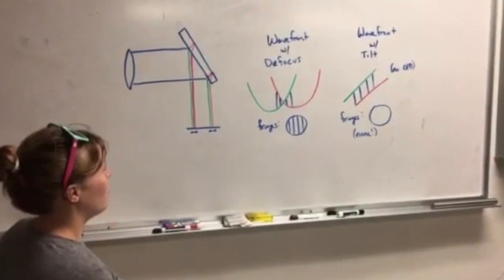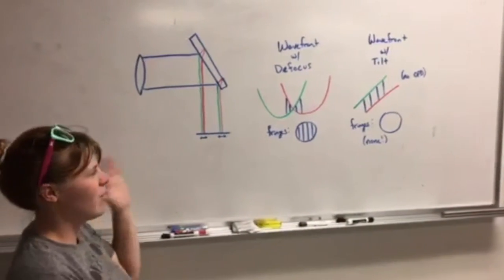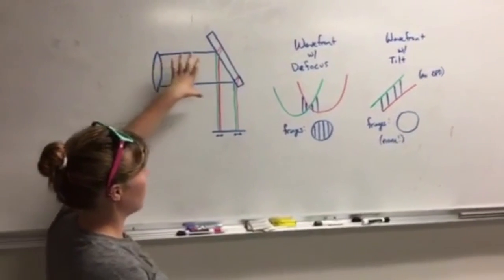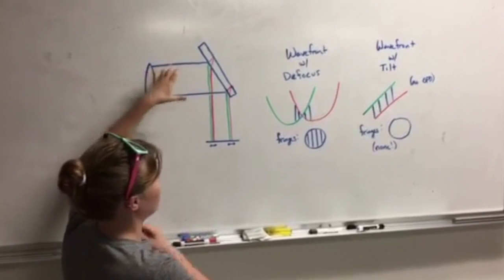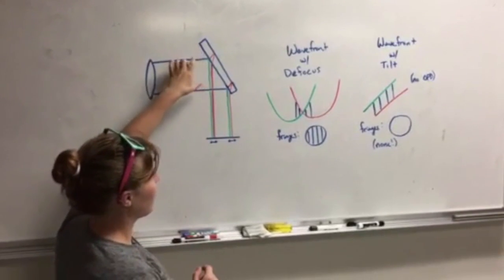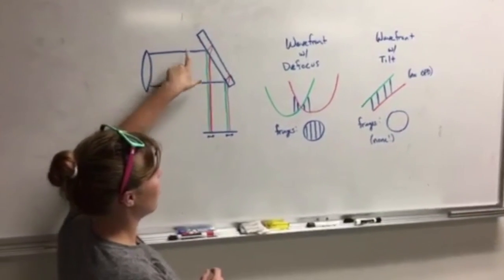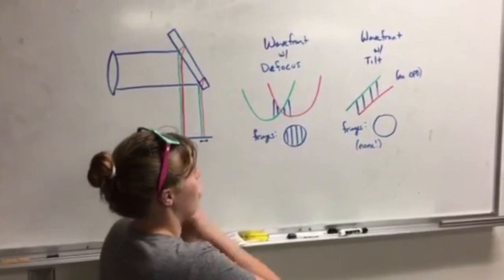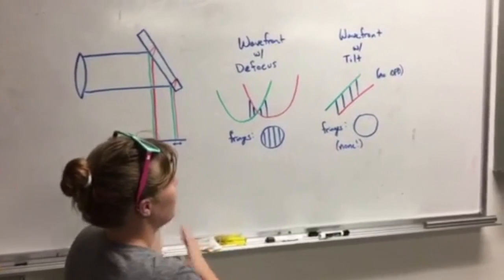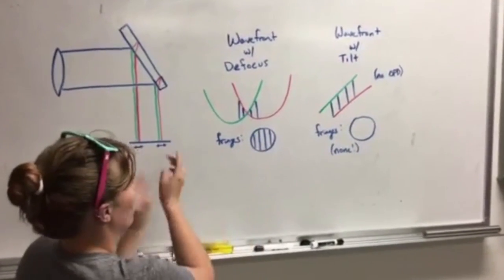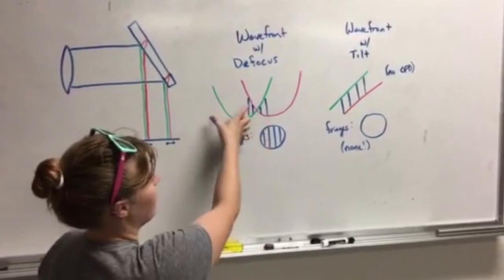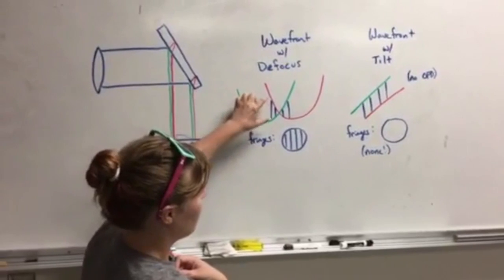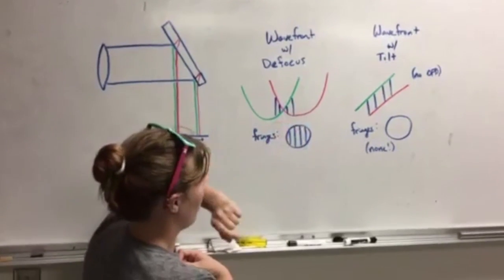For the first part of the lab, we looked at aberrations using a non-wedge shear plate interferometer, which basically takes the incoming light and spatially separates it because part of the light will reflect off the first surface and the other part will reflect off the rear surface. So if you have defocus in your system, that basically creates a parabolic wavefront. With the spatial separation, you basically have two of those interfering with each other, and your fringes are created by the optical path difference between the two wavefronts.